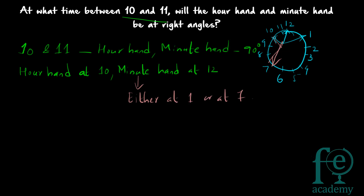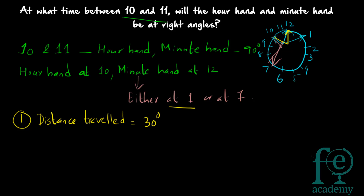Consider the first option: minute hand is at 1. We calculate from 10 o'clock, where the minute hand is already at 12. From 12, in order to reach 1, the distance to be travelled is 30 degrees. So for the first option, the distance travelled equals 30 degrees.